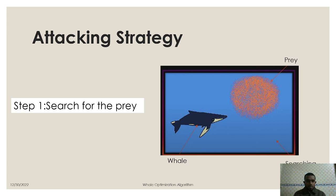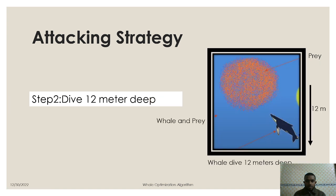So this whale in the first steps they search for the prey. In the picture we can see that a whale is searching for prey in the deep ocean and in the next step when he found a prey he dived 12 meters deep from the prey and this is the second step.